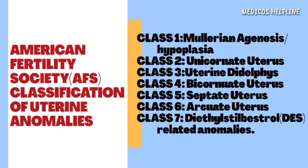According to the American Fertility Society (AFS), uterine anomalies can be classified into seven classes. The first one is Müllerian agenesis or hypoplasia, which, as the name suggests, involves a complete lack of development of the Müllerian ducts.